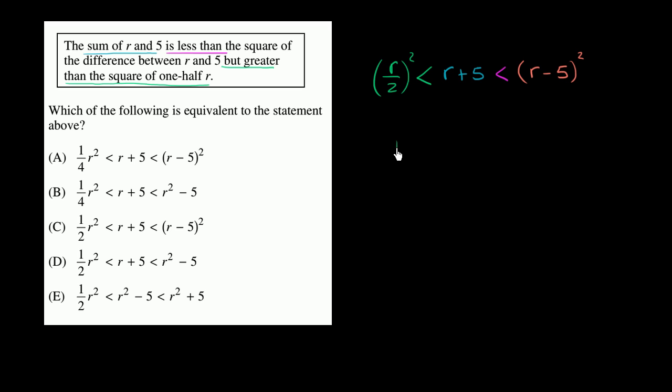This is the same thing as r squared over 4, which is the same thing as one-fourth r squared, is less than r plus 5, which is less than r minus 5 squared.